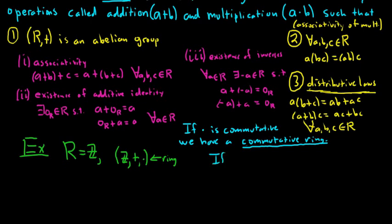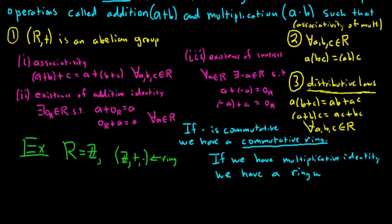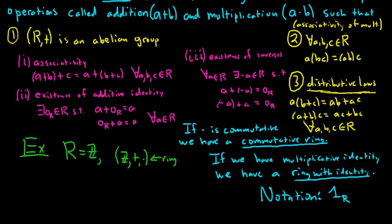If we have a multiplicative identity, we have what's called a ring with identity, also called a ring with one or a ring with unity. The notation for the multiplicative identity is 1, or 1 sub R. Rings are not required to be commutative, and they are not required to have a multiplicative identity — some authors require those things, but we will not.